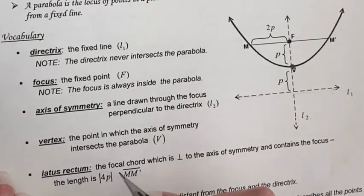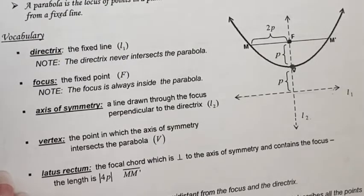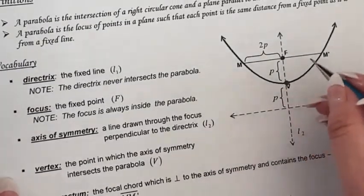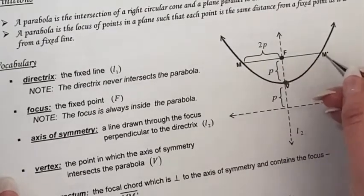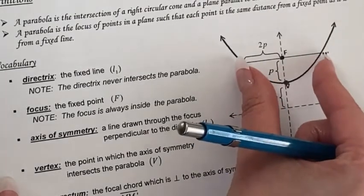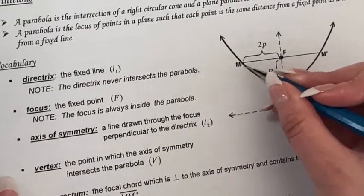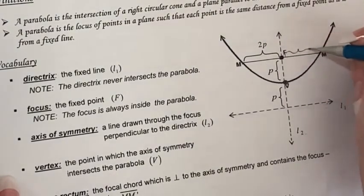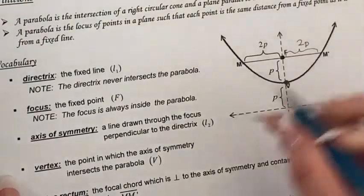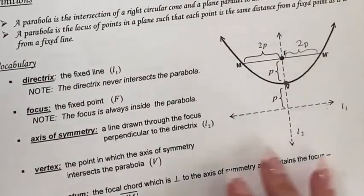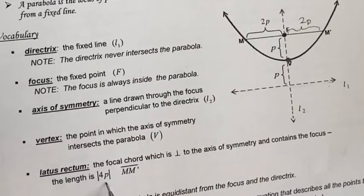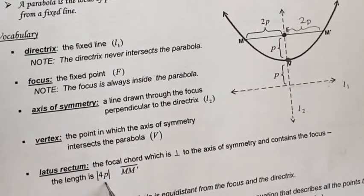The latus rectum is the focal chord perpendicular to the axis of symmetry that contains the focus. Its length is |4p|. From each endpoint to F is 2p, so total length is 4p. Since it's a distance, we use the absolute value of 4p — the length of the segment from M to M′.